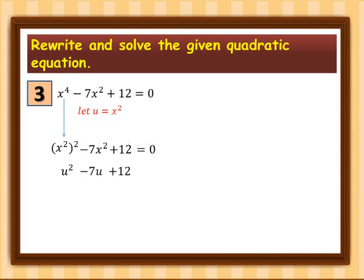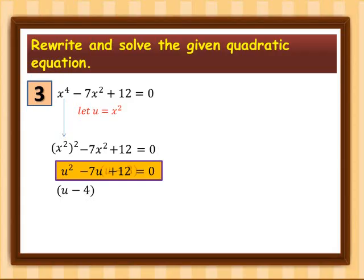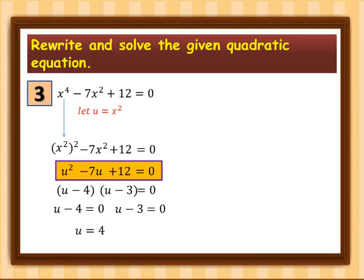Applying our lessons in quadratic equations, we factor this to get (u − 4)(u − 3) equal to 0. Equating each factor to 0: u − 4 = 0 and u − 3 = 0, giving u = 4 and u = 3. Take note: these are not yet the solutions for x.